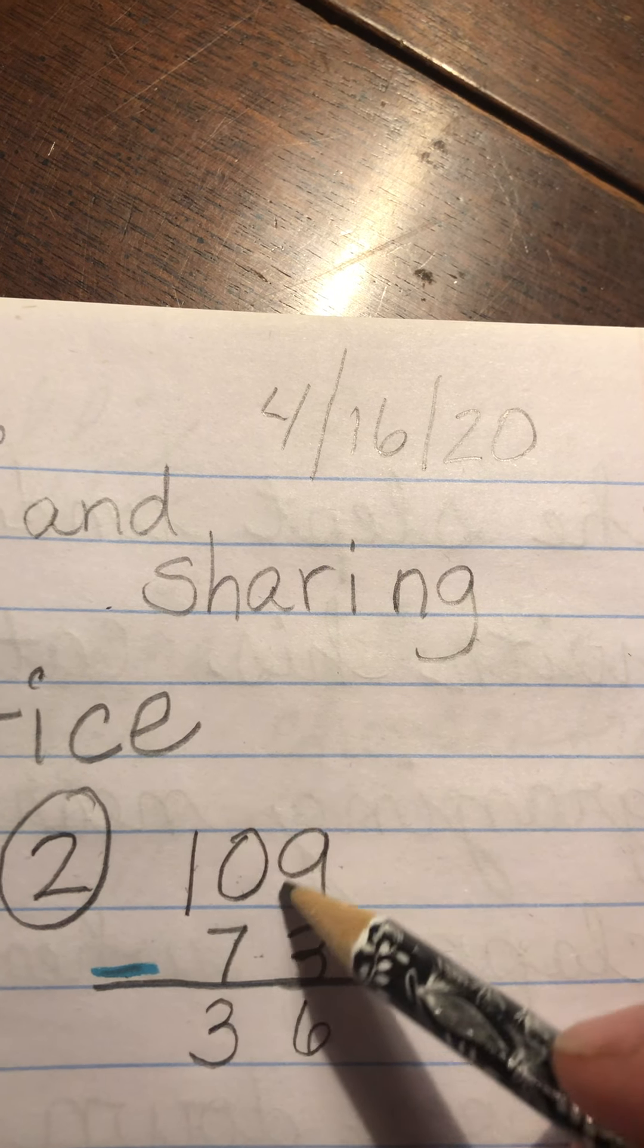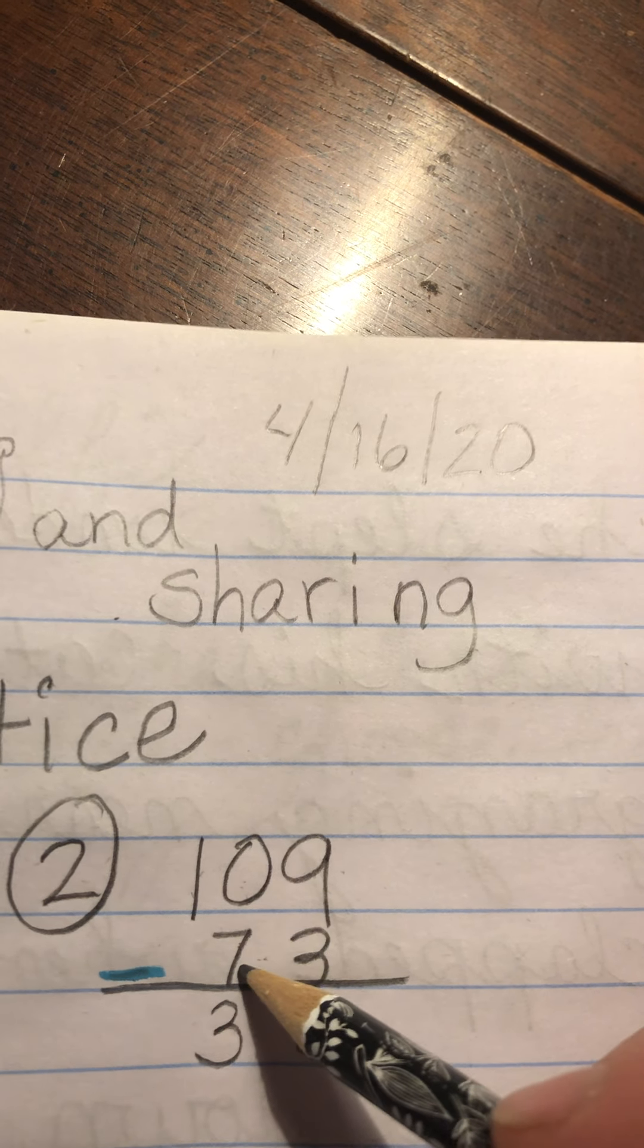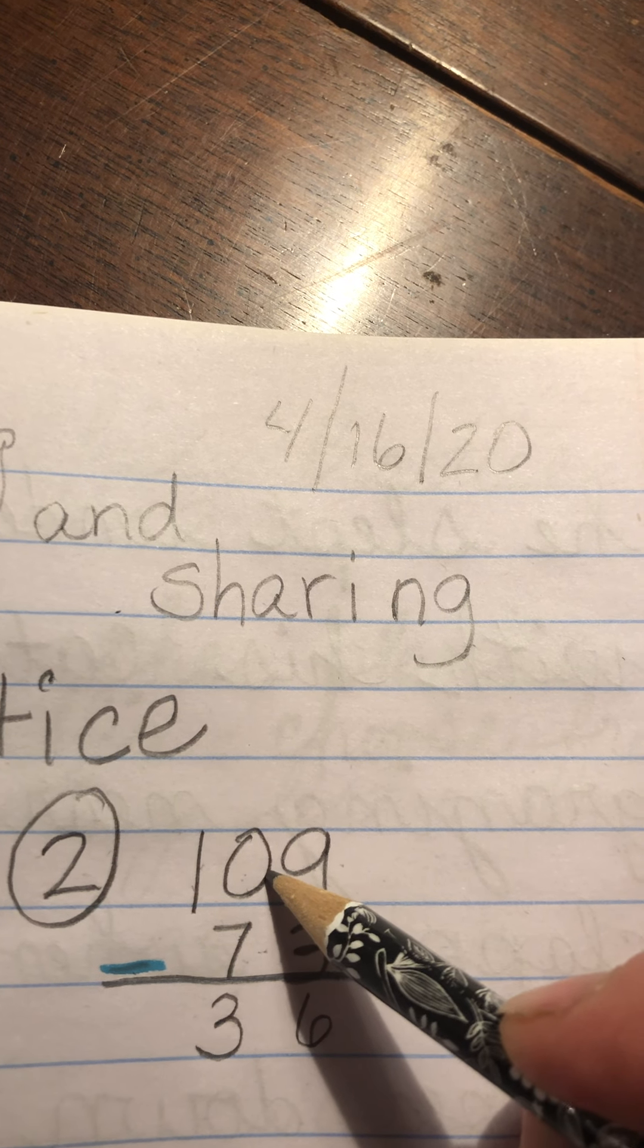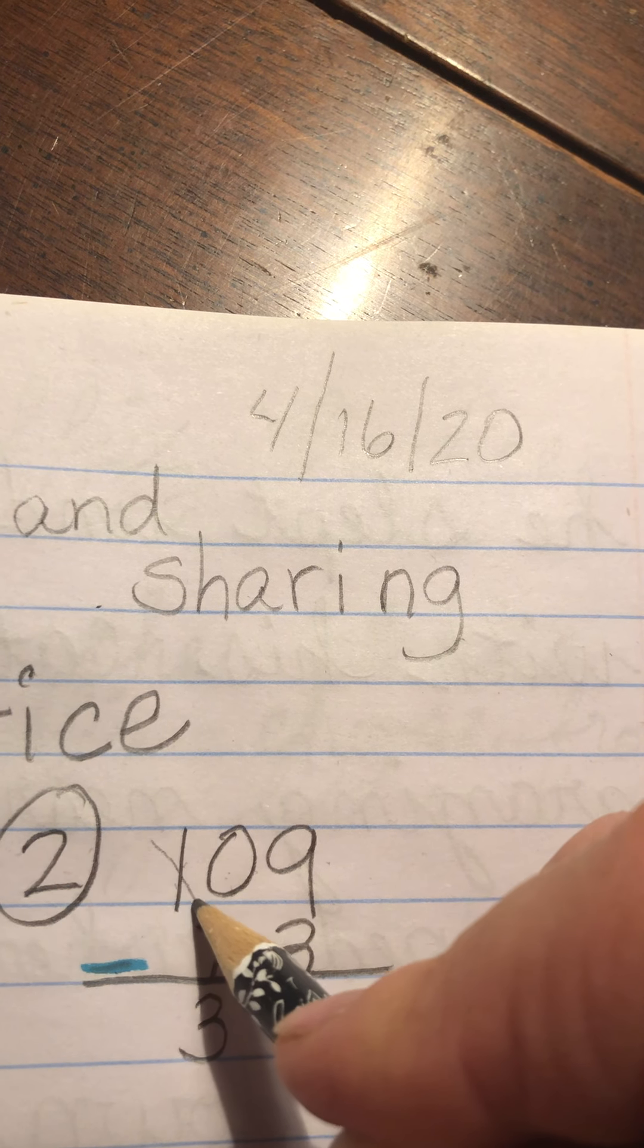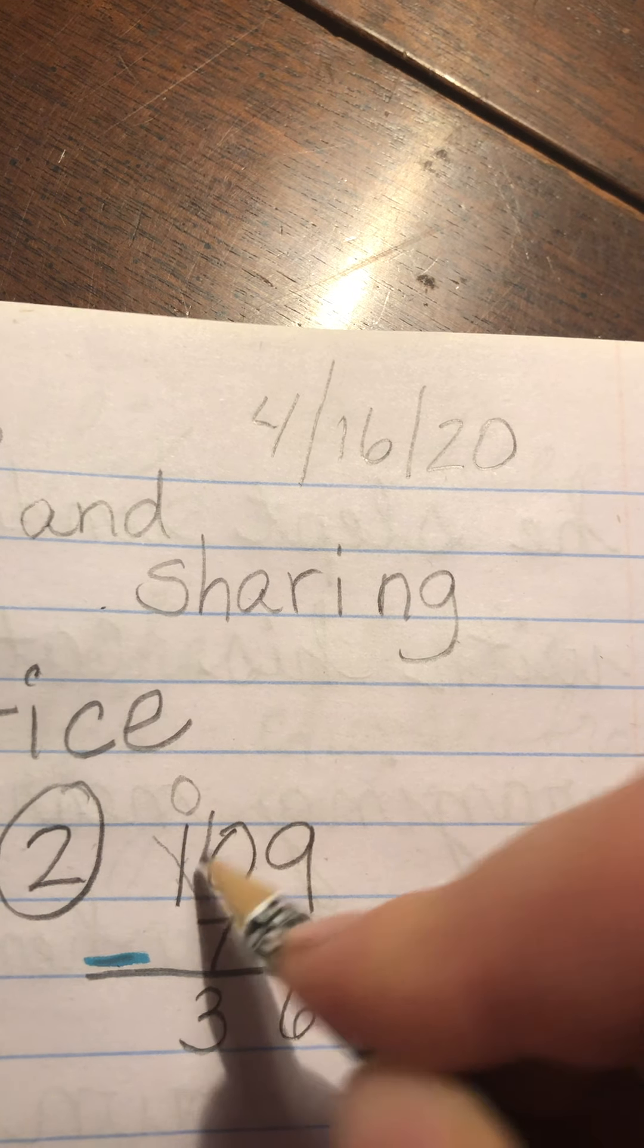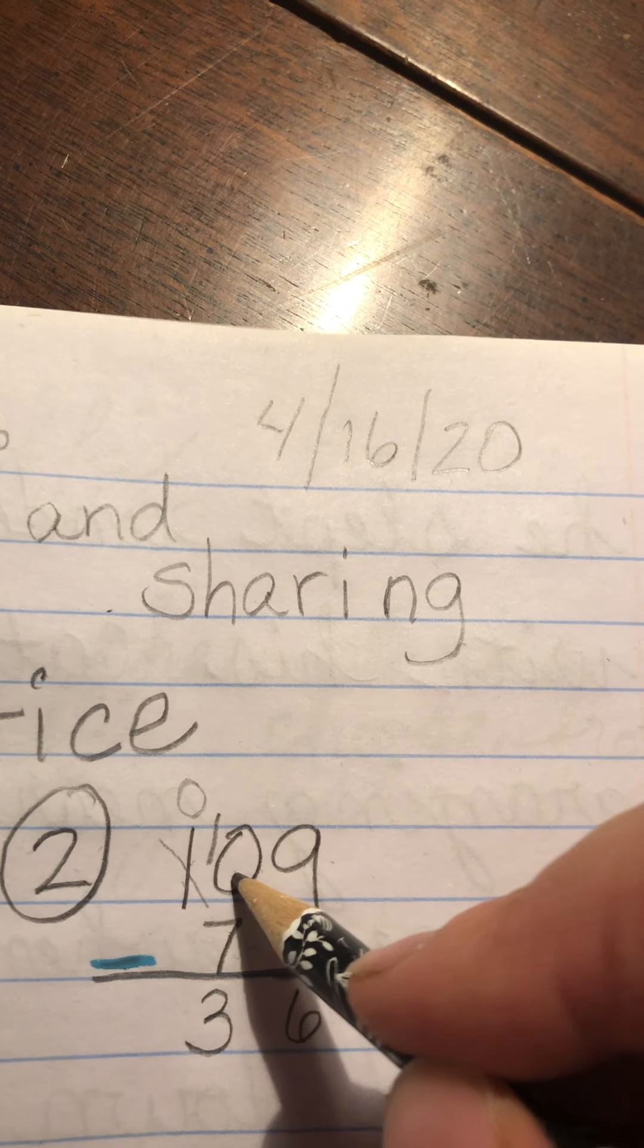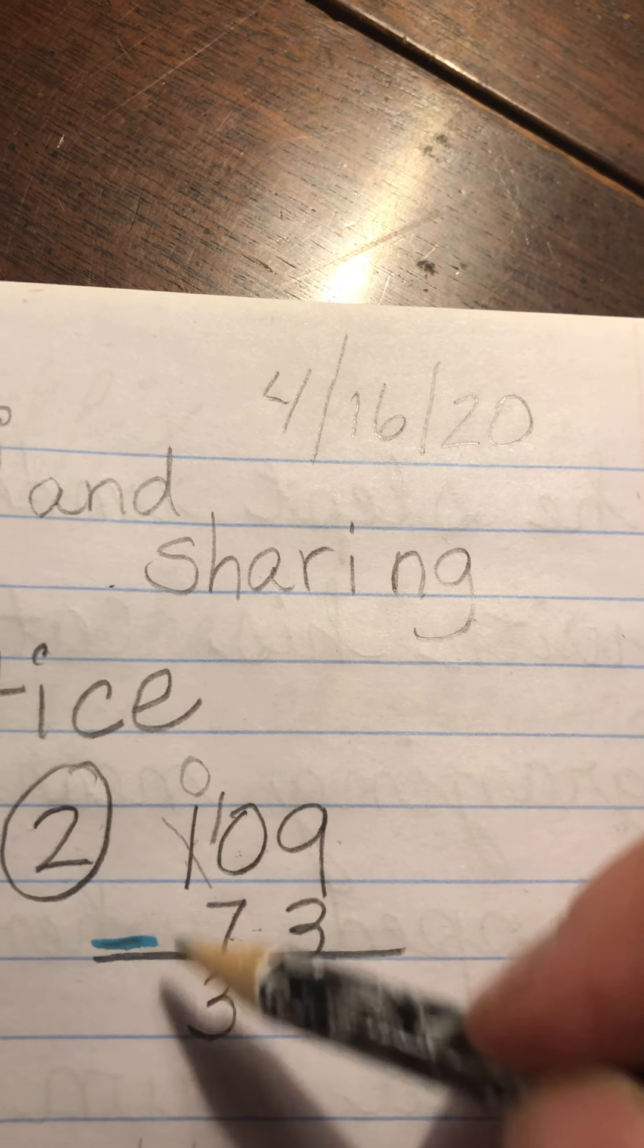So in the 10s column, there's nothing. So we could say that the 7 is trying to be taken away from the nothing in the 10s column. And if you borrowed or shared from the hundreds column and took all those hundreds away and put them right here and made this 100 for the 70, you would still have the same problem.